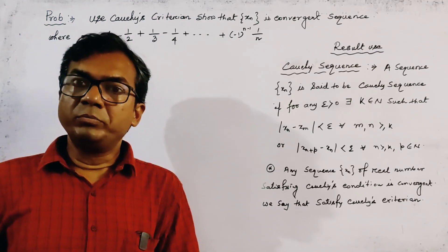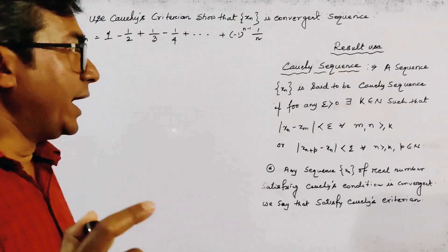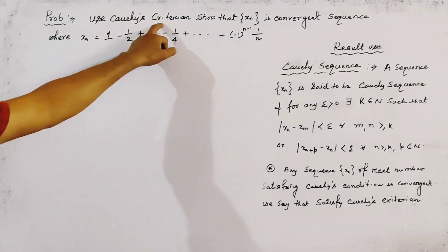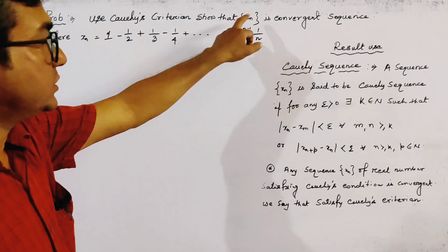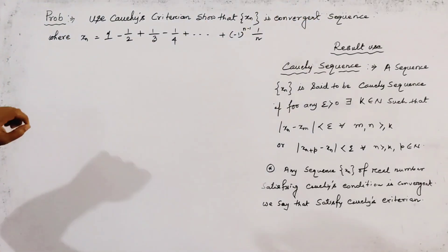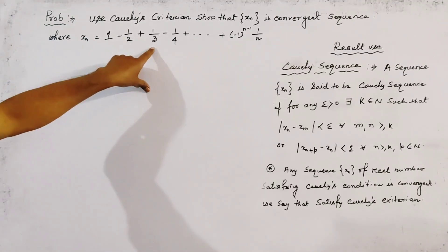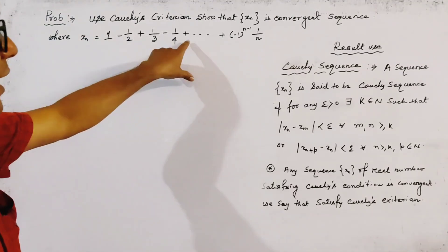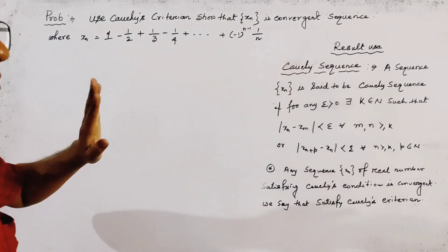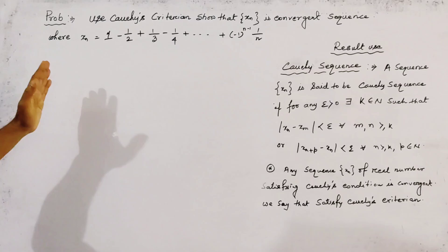Today's problem is from sequences of real numbers. The problem is: use Cauchy's criterion to show that the sequence xn is convergent, where xn is given by 1 - 1/2 + 1/3 - 1/4 + ... + (-1)^(n-1) * (1/n). This is the given sequence.